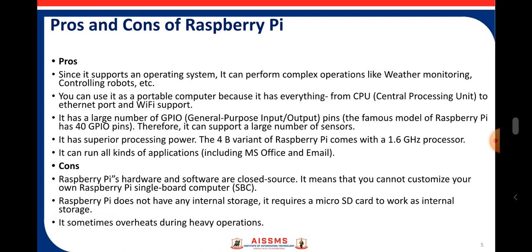Now the pros of Raspberry Pi: since it supports an operating system, it can perform complex operations like weather monitoring and controlling robots. You can use it as a portable computer as it has everything from CPU to Ethernet port and Wi-Fi support. It has a large number of GPIO pins and therefore can support a large number of sensors. It has superior processing power — the 4B variant comes with a 1.6 GHz processor — and can run all kinds of applications.